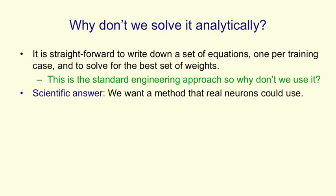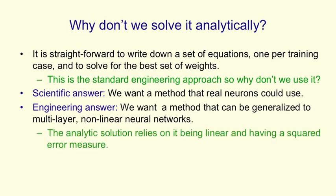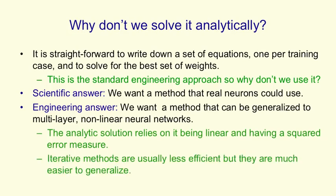The first answer, the scientific answer, is we'd like to understand what real neurons might be doing, and they're probably not solving a set of equations symbolically. An engineering answer is that we want a method that we can then generalize to multilayer nonlinear networks. The analytic solution relies on it being linear and having a squared error measure. An iterative method is usually less efficient, but much easier to generalize to more complex systems.